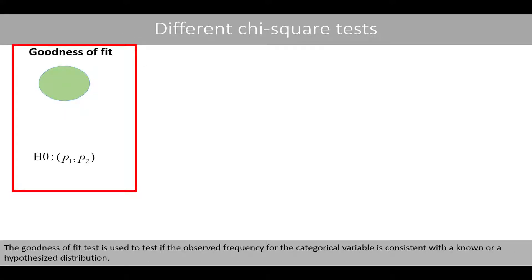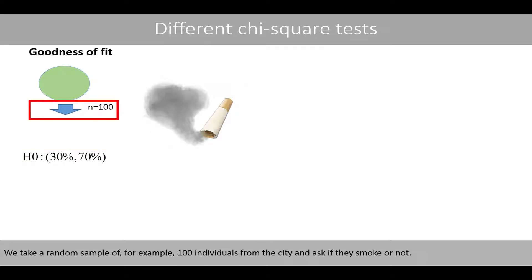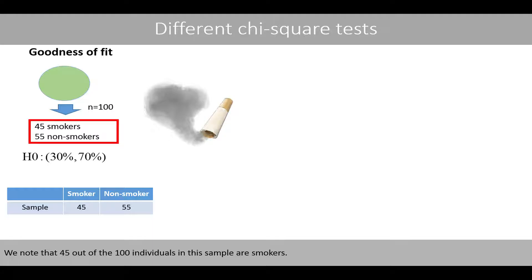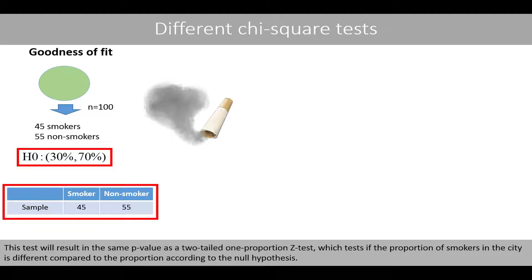The goodness of fit test is used to test if the observed frequency for a categorical variable is consistent with the known or hypothesized distribution. For example, let's say that we know that 30% of the individuals in a certain country are smokers and that 70% are non-smokers. We would then like to know if the proportion of smokers is the same in a certain city compared to the rest of the country. We take a random sample of 100 individuals from the city and ask if they smoke or not. We note that 45 out of the 100 individuals in this sample are smokers. We can then run a chi-square goodness of fit test to determine if the frequency distribution in the city is different from the rest of the country. This test will result in the same p-value as the two-tailed one-proportion z-test, which tests if the proportion of smokers in the city is different compared to the proportion according to the null hypothesis.